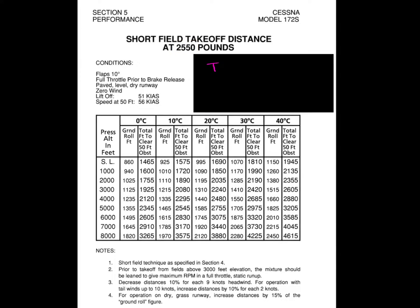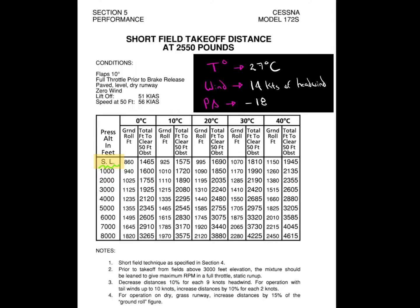Our current temperature is 27 degrees Celsius, and we will have a headwind of 14 knots on departure. The first thing we will need to do is to determine the pressure altitude from the airport we're departing from. But considering that pressure altitude only has a slight difference with the elevation of the airport, we will use the closest value from our table. Today's pressure altitude is minus 180 feet, therefore we will use the values presented under sea level.